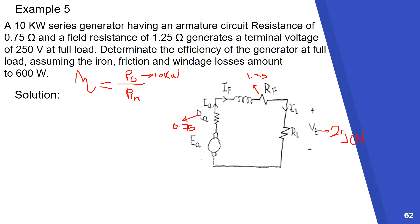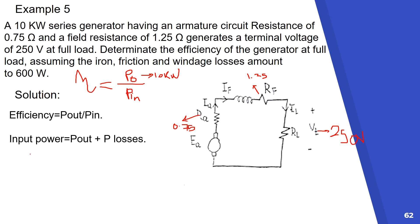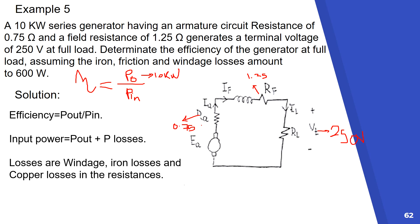We need to find the power developed on the rotor itself. To find the power we need the current I_A and E_A. In a series generator, I_A equals I_F equals I_Load. The input power to the generator equals the power output plus all the losses — the copper losses plus the friction and iron losses. Both approaches give the same answer.